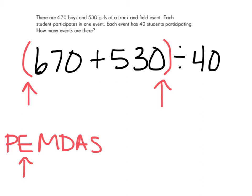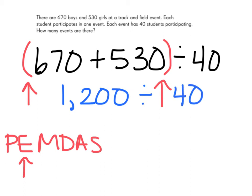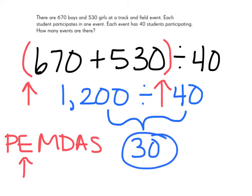First, we'll add 670 plus 530 to get an answer of 1,200. Now we divide 1,200 by 40 to tell us how many events took place at the Track and Field event. 1,200 divided by 40 is 30, so there were 30 events with 40 students each participating at the Track and Field event.